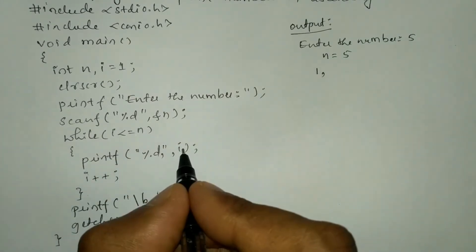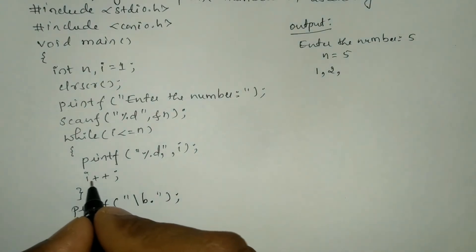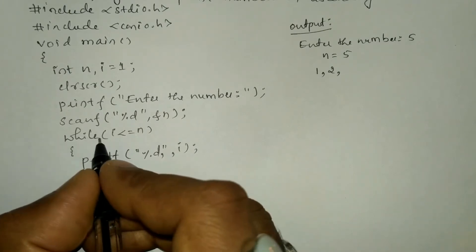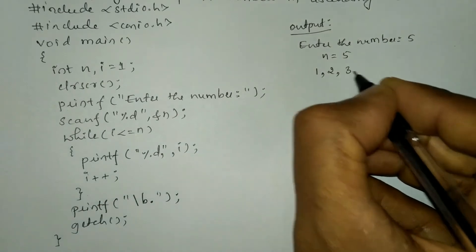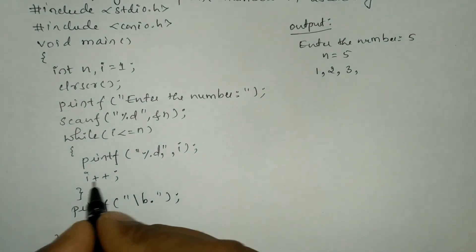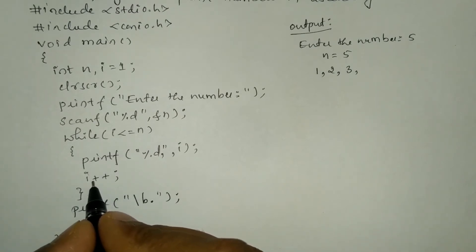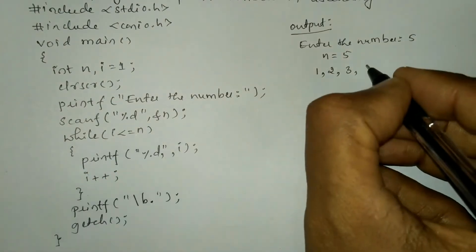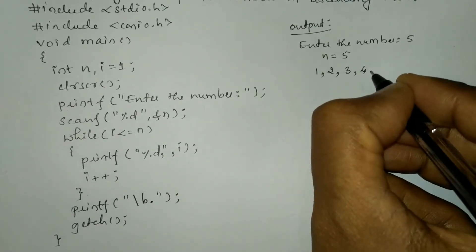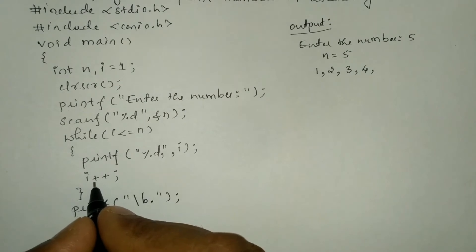Again control transfers to while — two is less than or equal to five, yes condition is true, then it is going to print the value of i that is two, and again print a comma, then increment i by one. Now three is less than or equal to five, yes it is true, it prints three and puts a comma, increments i to four. Again control transfers to while — four is less than or equal to five, yes condition is true, the printf statement executes, prints four and puts a comma, then increments i by one.